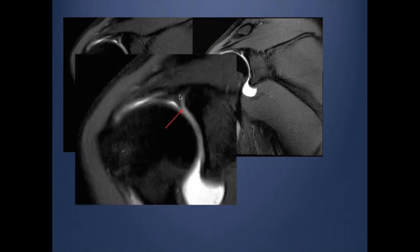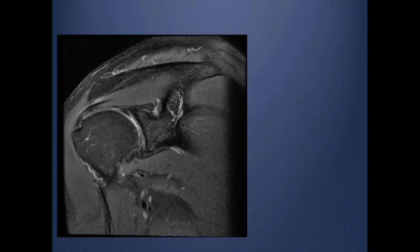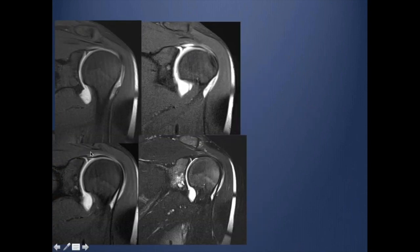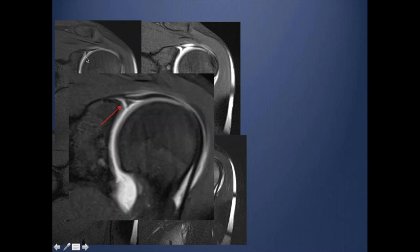This looks like more of a variant — a sub-labral recess. If you look at this next one, we have abnormal signal that does go laterally within the biceps anchor. So this is definitely a SLAP lesion. In this case, you can see it is more than 3 mm, so this is another case of SLAP as well.